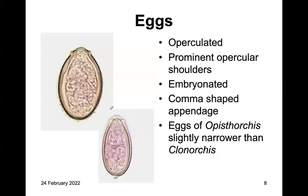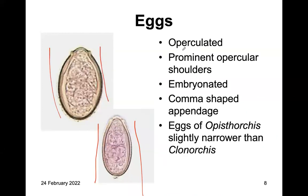Here is an example of the eggs of Opisthorchis and Clonorchis. The eggs of Opisthorchis are usually narrow — this is Opisthorchis — and this is Clonorchis, which is usually broader. They are all operculated and have prominent opercular shoulders. They also have what is called a comma-shaped appendage.